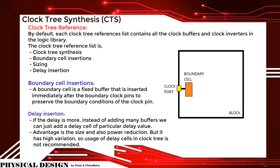Boundary cell insertion: a boundary cell is a fixed buffer that is inserted immediately after the boundary clock pins to preserve the boundary condition of the clock pin. Delay insertion: if the delay is small, instead of adding many buffers, we can add a delay cell of a particular delay value. The advantage is smaller size and power reduction, but it has high variation. So usage of delay cells in the clock tree is not recommended.